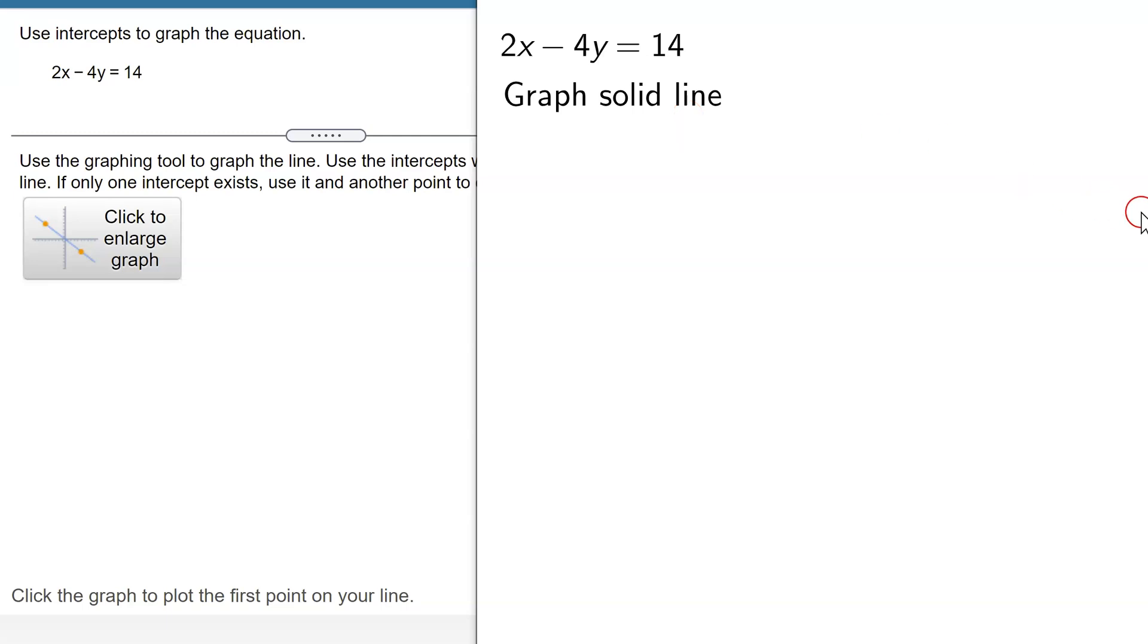So now I need to find the intercepts. The x-intercept is when y equals 0, so I'm going to plug 0 into this equation. So I get 2x minus 4 times 0 equals 14. 4 times 0 is 0. So I'm just going to get 2x equals 14, dividing both sides by 2. x is going to equal 14 divided by 2, which is 7. So my x-intercept is the point 7 comma 0.